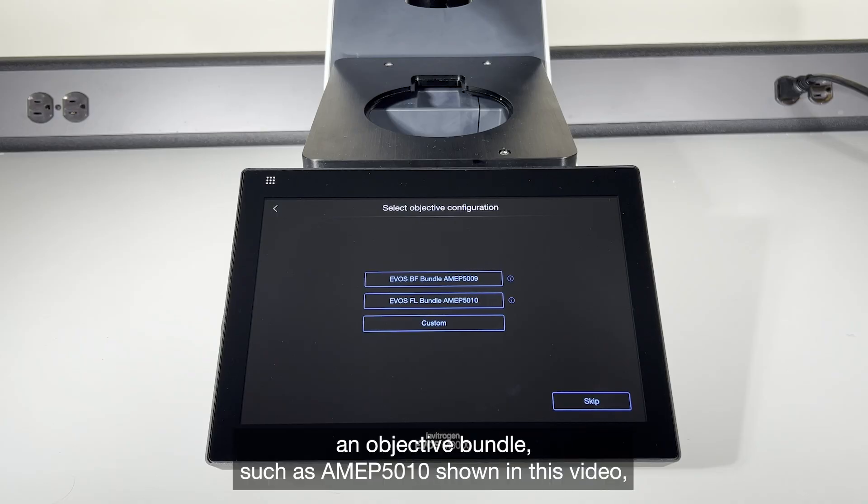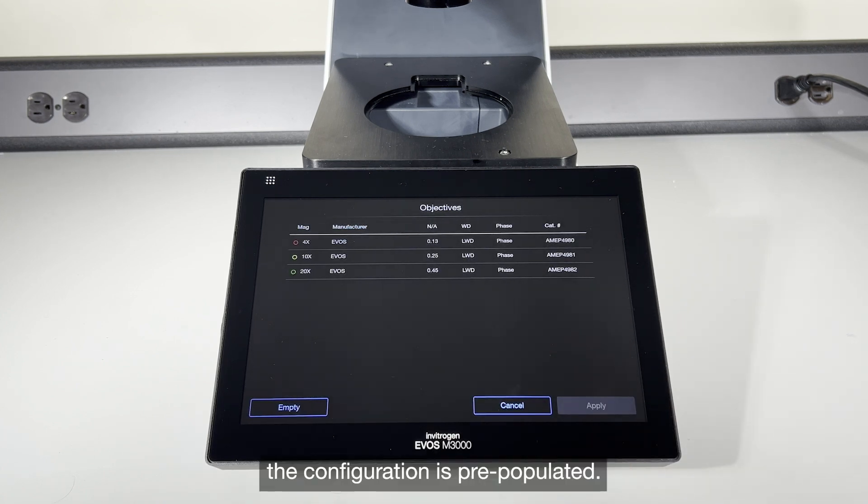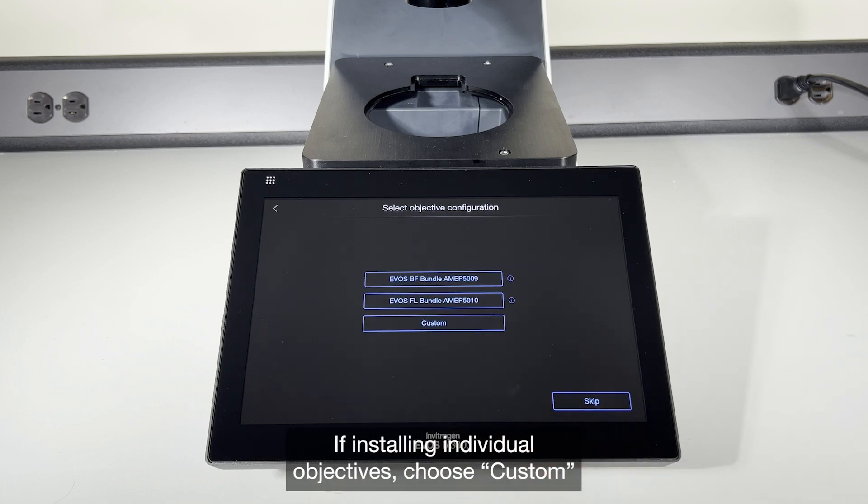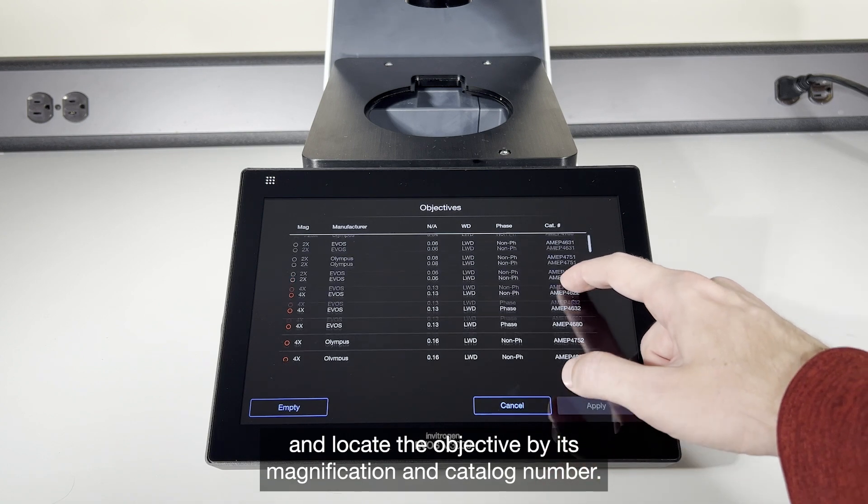If installing an objective bundle such as AMEP 5010 shown in this video, the configuration is pre-populated. If installing individual objectives, choose custom and locate the objective by its magnification and catalog number.